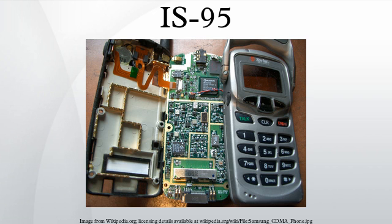Other forward channels, selected by the Walsh code, carry data from the network to the mobiles. Data consists of network signaling and user traffic. Generally, data to be transmitted is divided into frames of bits. A frame of bits is passed through a convolutional encoder, adding forward error correction redundancy, generating a frame of symbols. These symbols are then spread with the Walsh and PN sequences and transmitted.